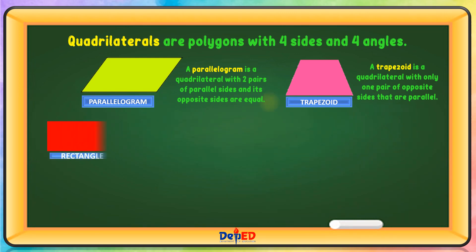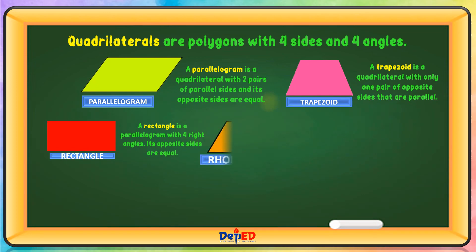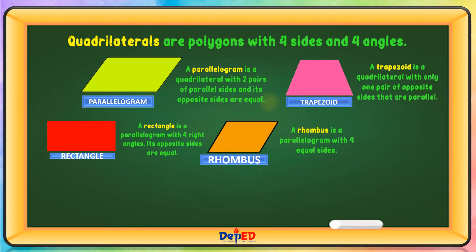A rectangle is a parallelogram with four right angles. Its opposite sides are equal. A rhombus is a parallelogram with four equal sides.